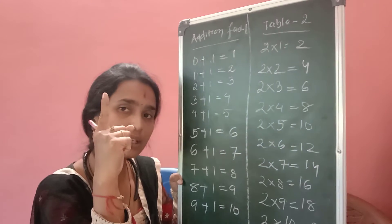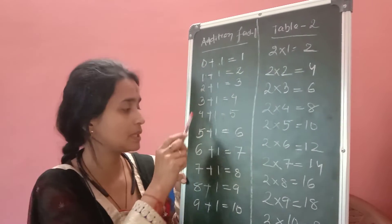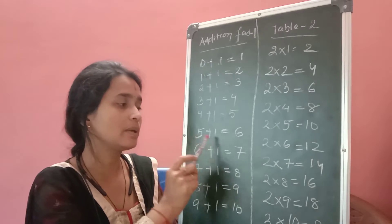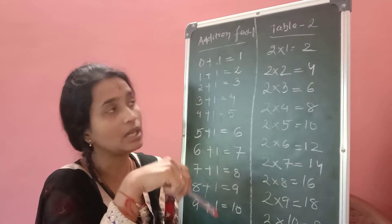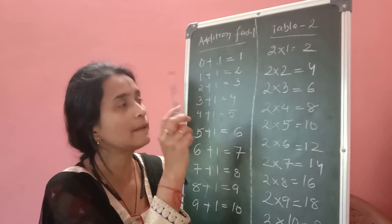So if you have two chocolates and someone gives you one more chocolate, how much do you have? Three. If you have five chocolates and someone gives you one more, how many do you have? Six chocolates. So this is the fact number one.